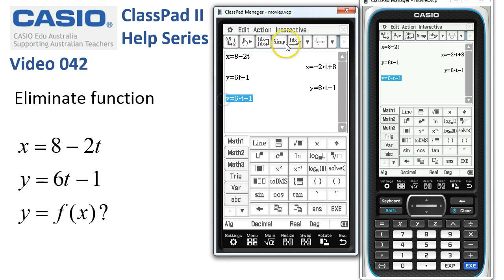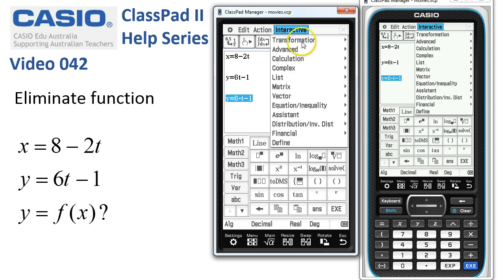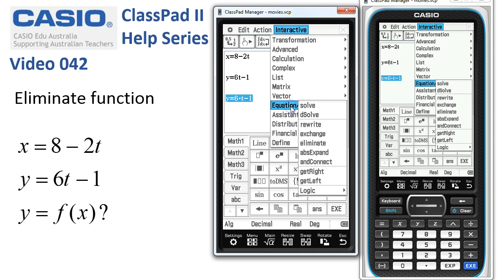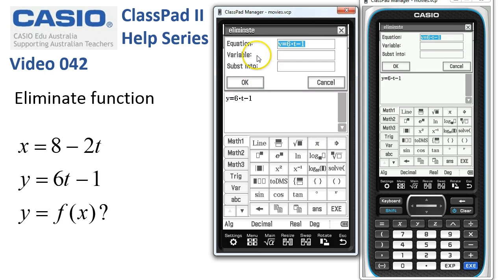Now I'm going to select this expression, head off to interactive, and because it's to do with equations you'll find the eliminate command down here. It's picked up the originally selected equation. The variable that we want to eliminate is t, so I'll head down to the variable menu and tap in a t.